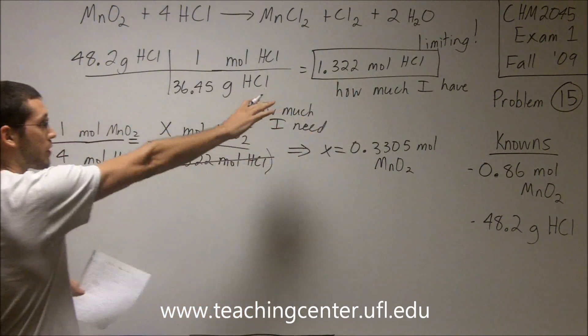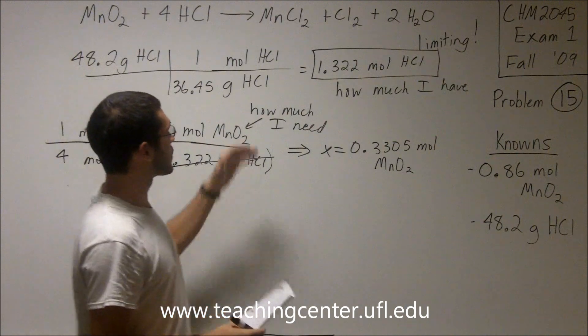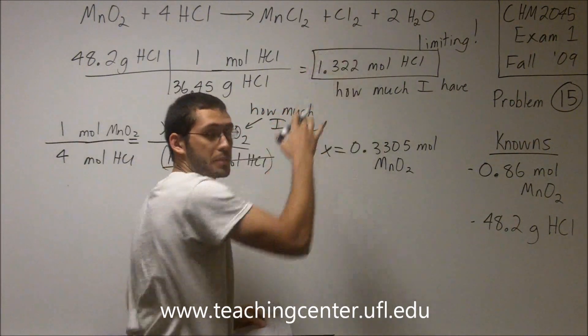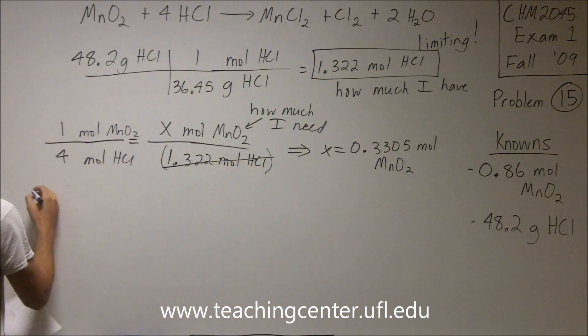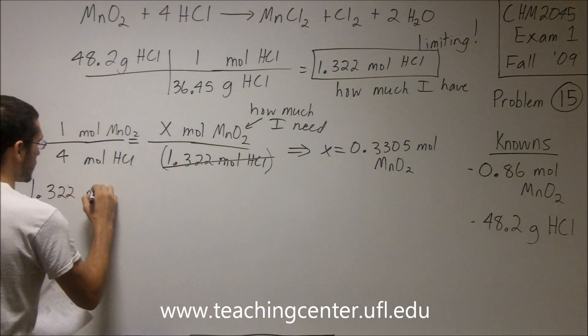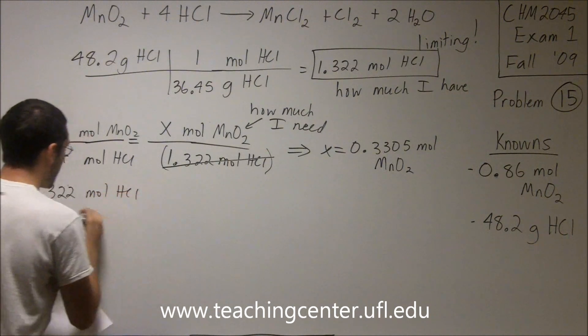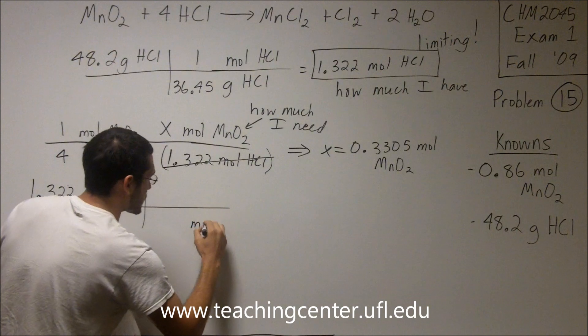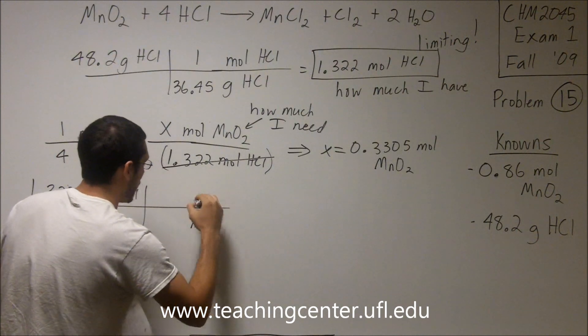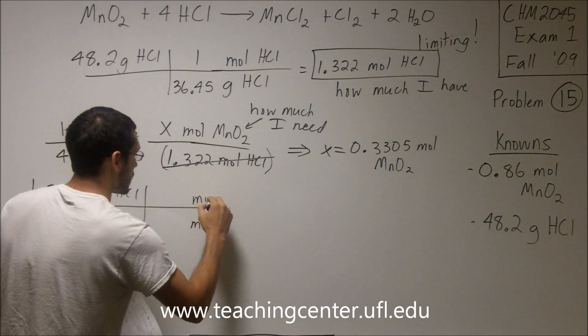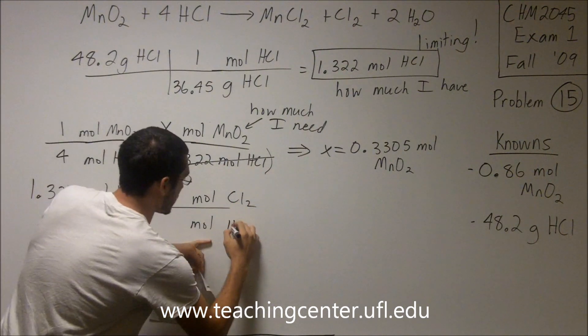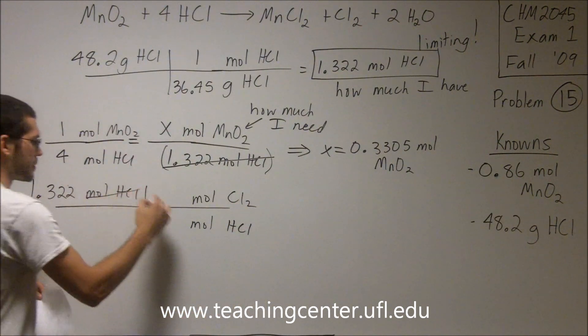So we know HCl is the limiting reagent. Therefore, we have to work with only the HCl. We're looking for grams of Cl2. So now I know how much Cl2 I potentially can make. So I'm going to start out with my limiting reagent, 1.322 moles HCl. And I'm going to convert this. I need to get to Cl2. So let's convert to moles of Cl2.